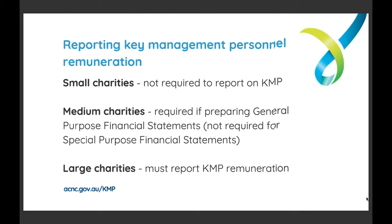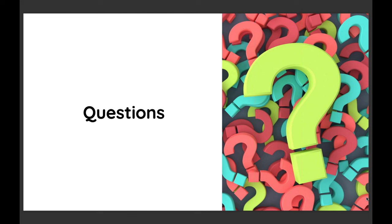That brings us to the end of our main presentation. We have some time to answer questions. A few people asked about key management personnel remuneration. Key management personnel, or KMP, are the senior decision makers in a charity — that includes responsible people and other senior staff like the CEO, but not team leaders or operational managers. Remuneration refers to all forms of consideration provided by the charity in exchange for services rendered, covering things like wages or salaries, fringe benefits and termination benefits.